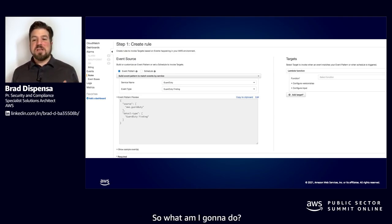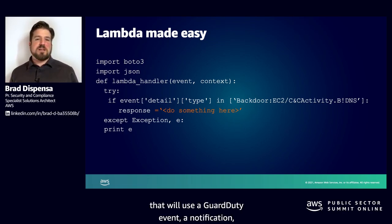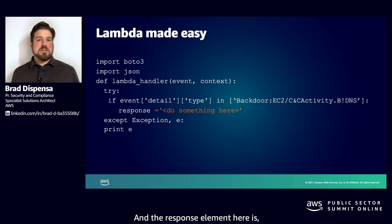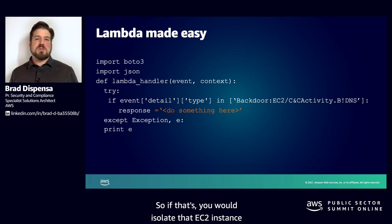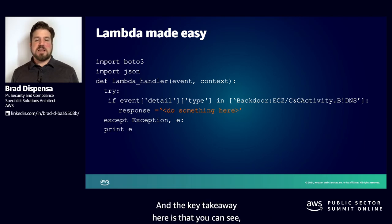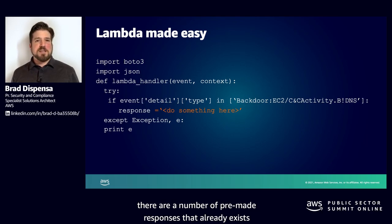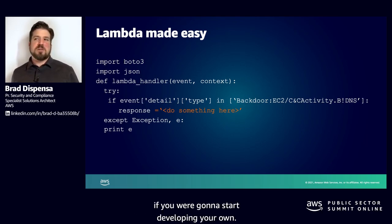The answer is that oftentimes customers make their response functions more complicated than they really need to be. This is an example of nine lines of Python that will use a GuardDuty event notification — in this case, backdoor EC2 command and control activity communicating through DNS. The response element is whatever you would do from an API perspective when you receive that alert: isolate the EC2 instance by changing security groups, modify a network access control list, or stop the instance. Any customer can use these. In the AWS samples library, there are pre-made responses that already exist as reference items if you want to start developing your own.